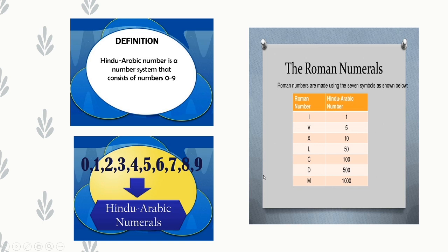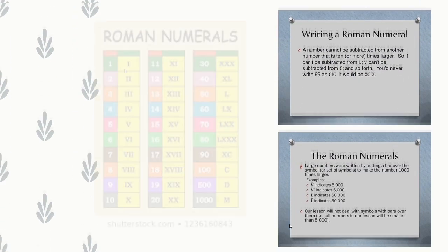Whereas in Roman numerals, we use 7 symbols to form the numerals. The 7 symbols are I, V, X, L, C, D, and M. Where I stands for 1, V stands for 5, X for 10, L for 50, C for 100, D for 500, and M for 1000.